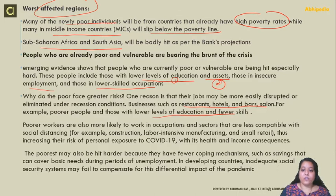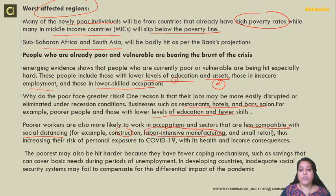Poor workers are also in sectors that are less compatible with social distancing, such as construction and labor-intensive manufacturing. During COVID-19, we saw migrants returning to their hometowns and home states because factory units, manufacturing units, and construction units were all closed.